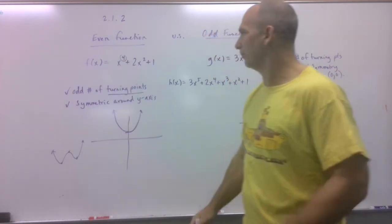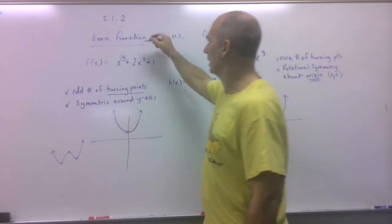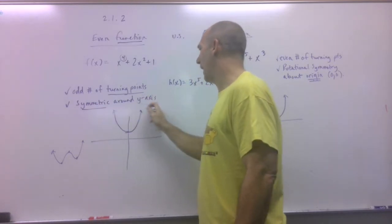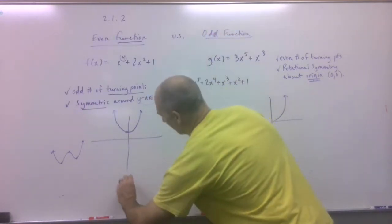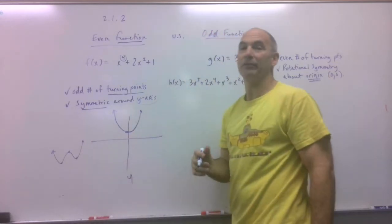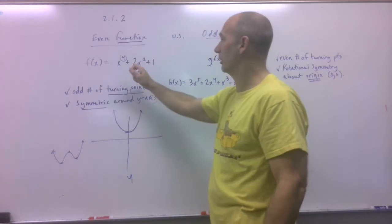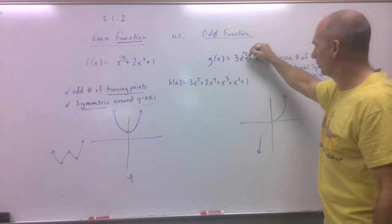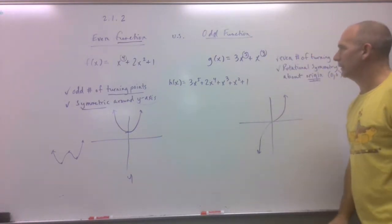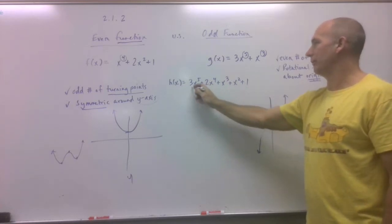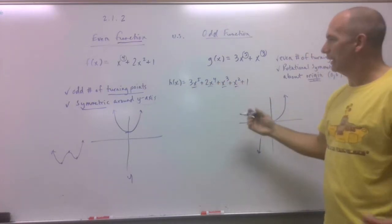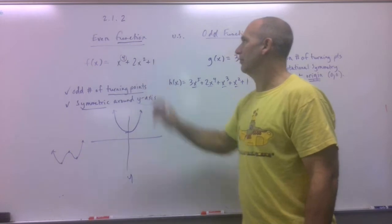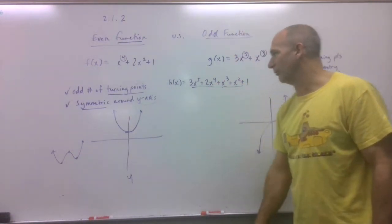By definition, an even function only has even exponents and is symmetric around the y-axis. If you took the y-axis and spun it, you'd get the exact same graph. Now an odd function is slightly different - it starts with only odd powers. There are different functions that have all mixed odd and even powers, and those don't fit the definition of odd or even functions, but they are still functions with equations.